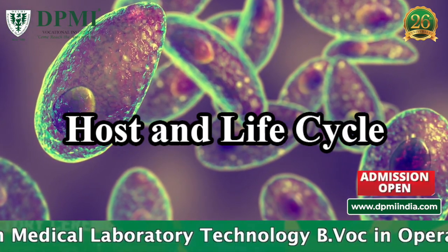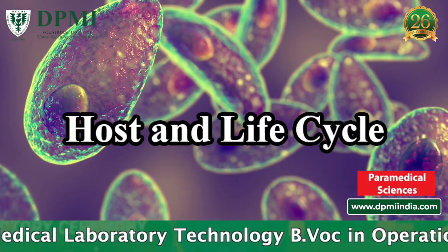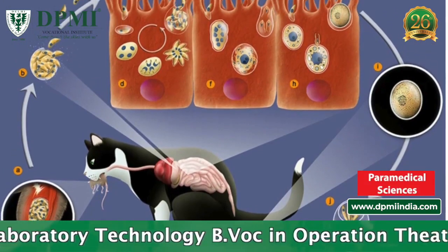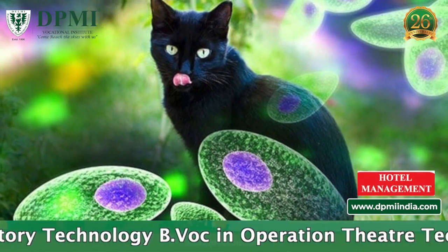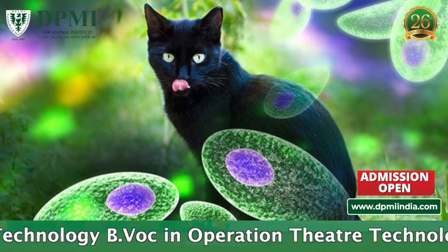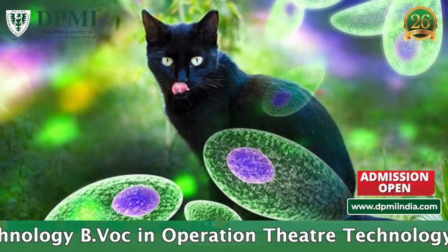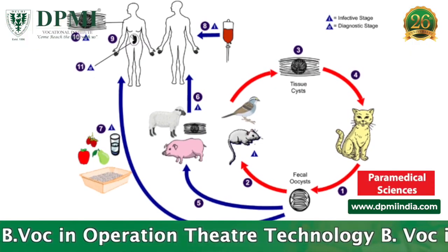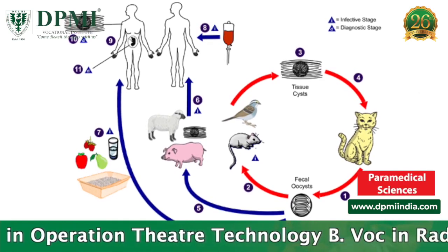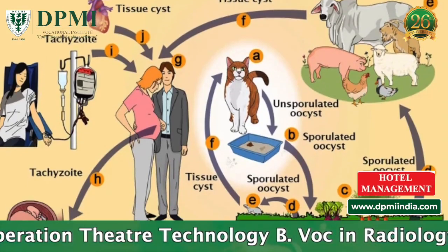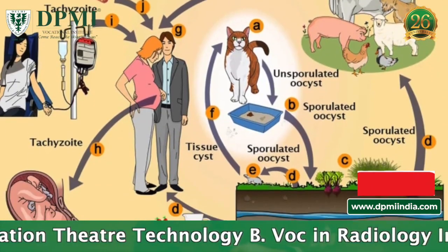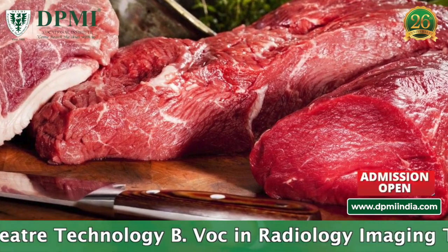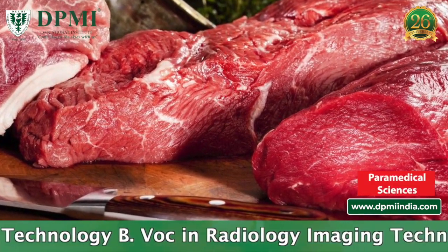The life cycle involves two hosts. The definitive host is the cat and other felines, where the sexual cycle takes place. The intermediate host includes humans and other mammals, where the asexual cycle takes place. Infection is acquired by ingestion of uncooked cat and other animal meat.